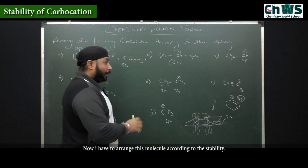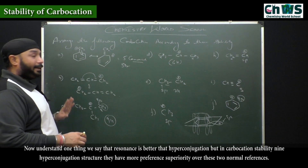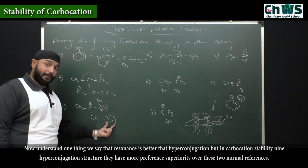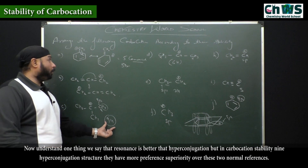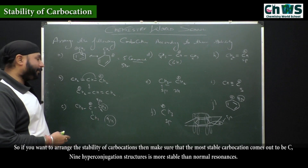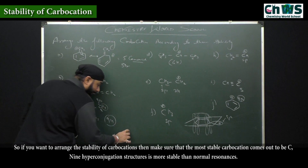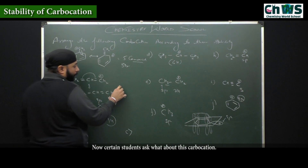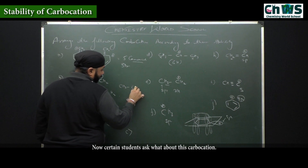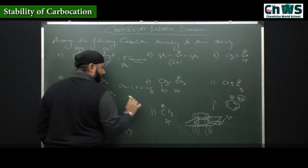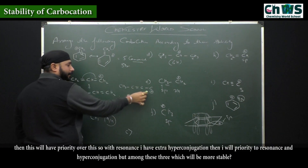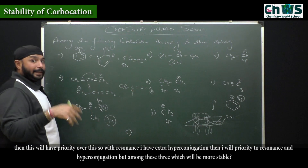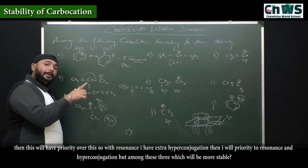Now I have to arrange these molecules according to stability. Generally we say resonance is better than hyperconjugation, but in carbocation stability, nine hyperconjugation structures have more precedence over two normal resonances. So the most stable carbocation has nine hyperconjugating structures. If I have resonance plus extra hyperconjugation structures together, then I give priority to resonance plus hyperconjugation over resonance alone.